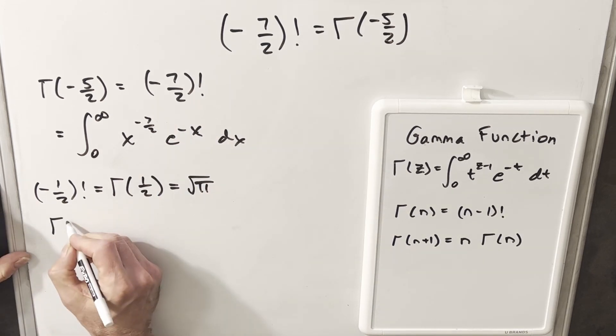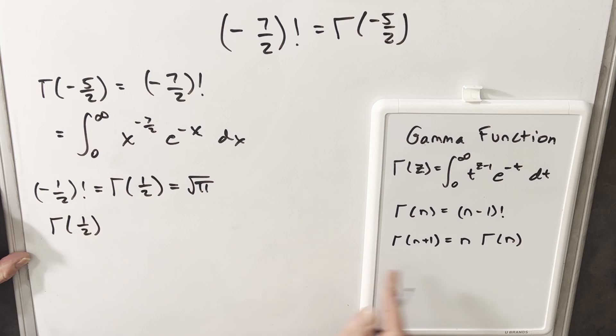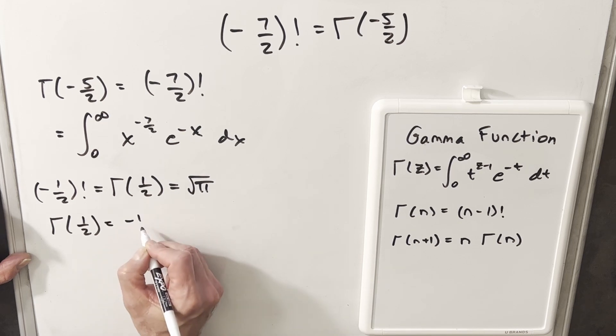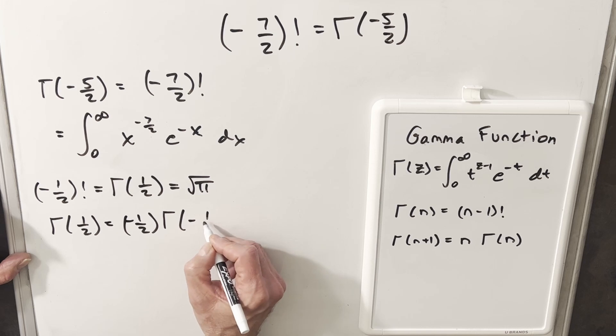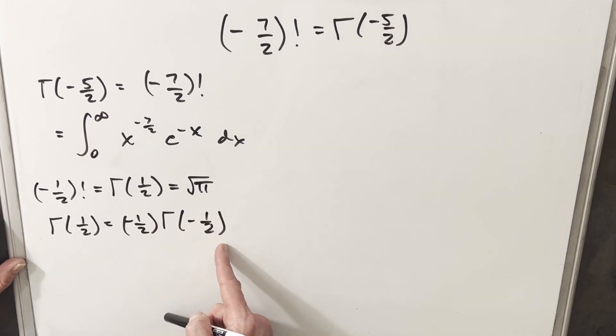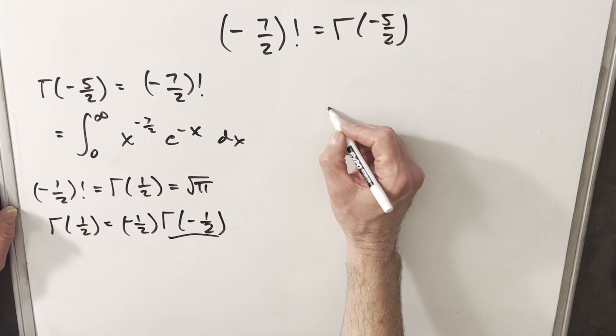So what I'm going to do is we're going to take our gamma of one half, and we're going to use this last formula here, just noticing if our input's a half, if you subtract one, then this is going to be the same thing as minus one half times gamma of minus one half. But now we can do this repeatedly. So what is this?